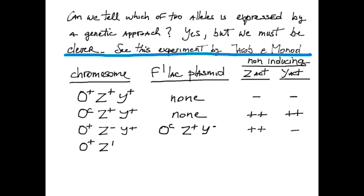Next, they tested a genotype where O+ was connected to Z+ and Y-, while OC was in phase with Z- and Y+. This latter strain expressed only Y.